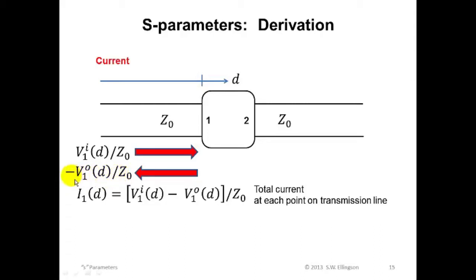Now, mind carefully this minus sign. If you're not sure where that comes from, you should review your old notes on transmission lines where you will certainly have addressed this. The total current, I sub one, is just the sum of the inbound and the outbound currents. And I've just written that out as an equation here.